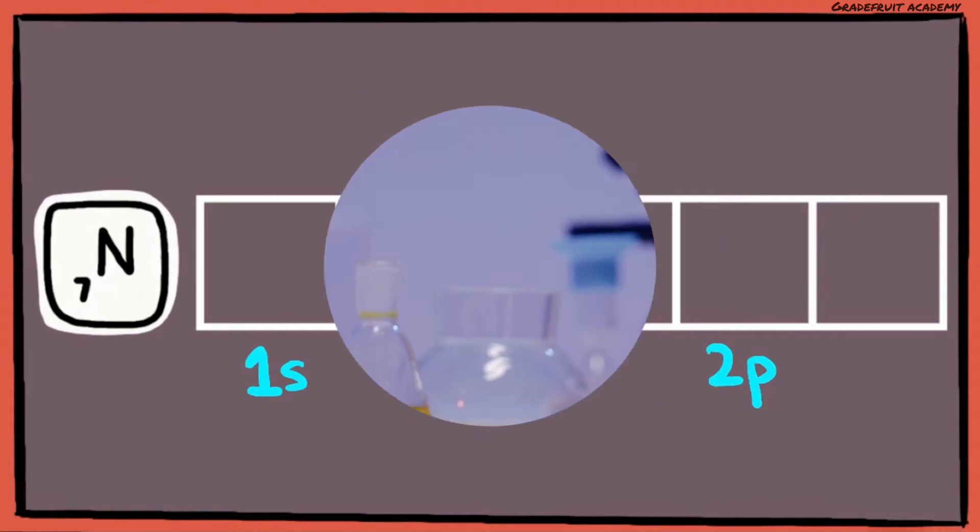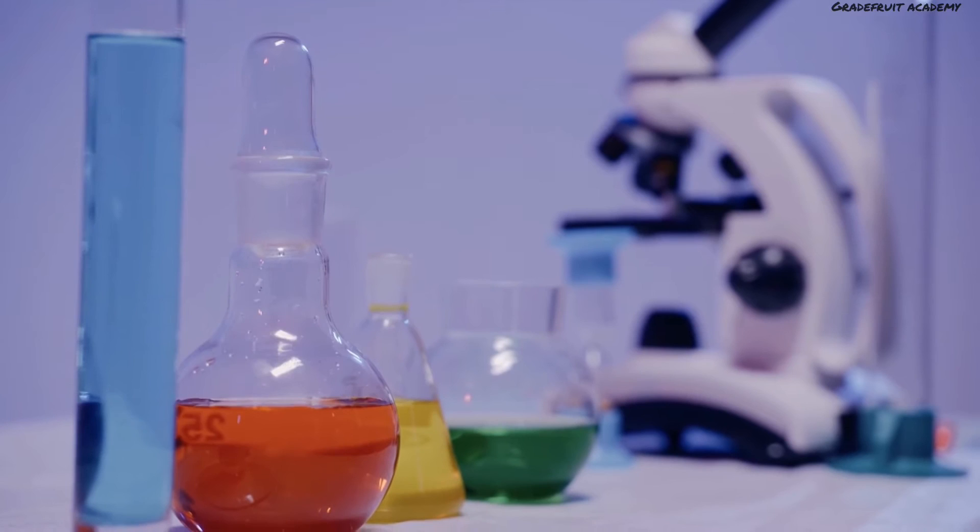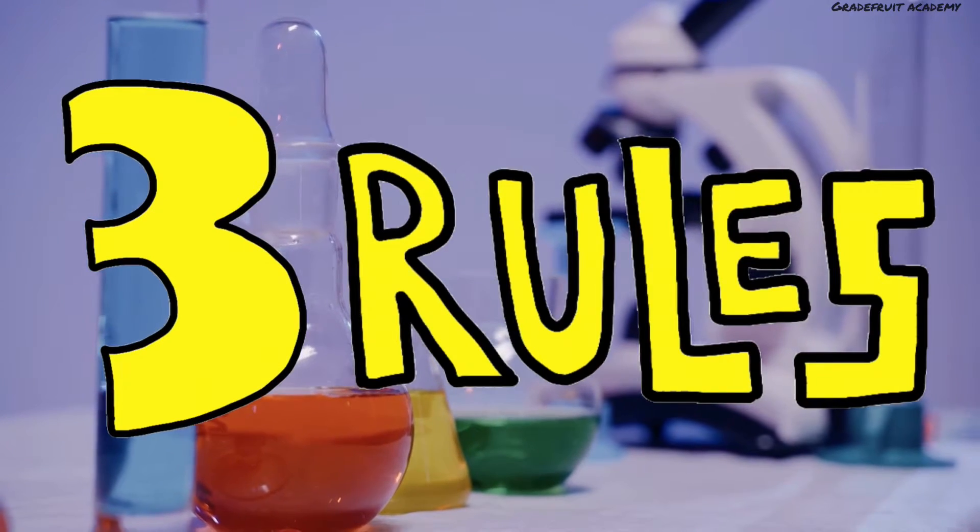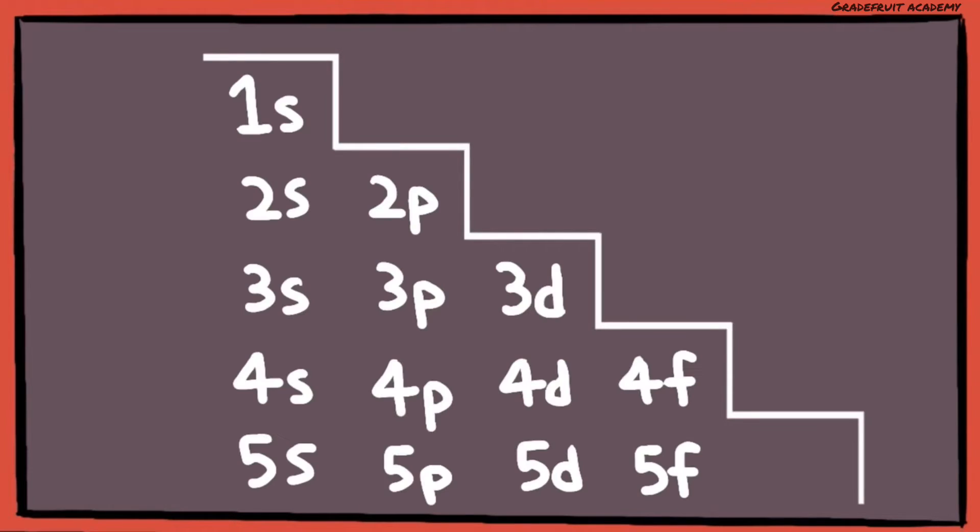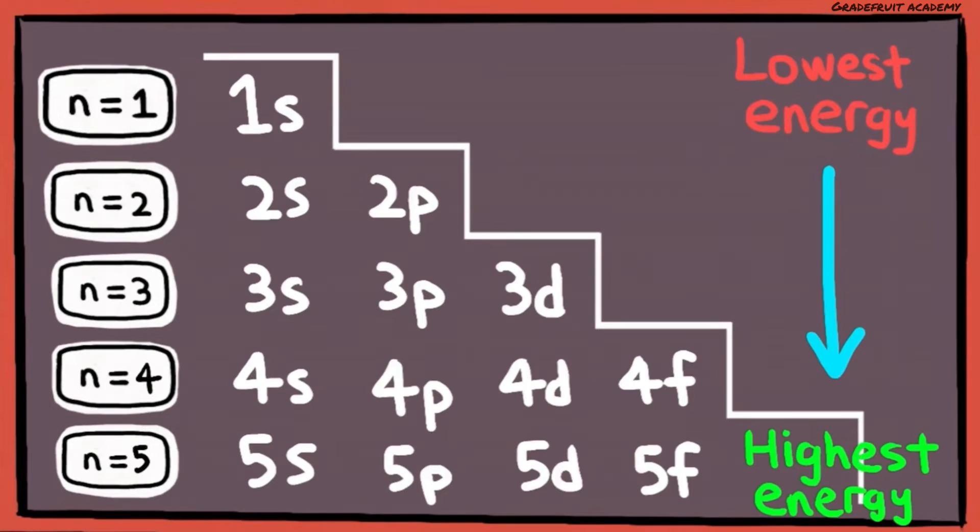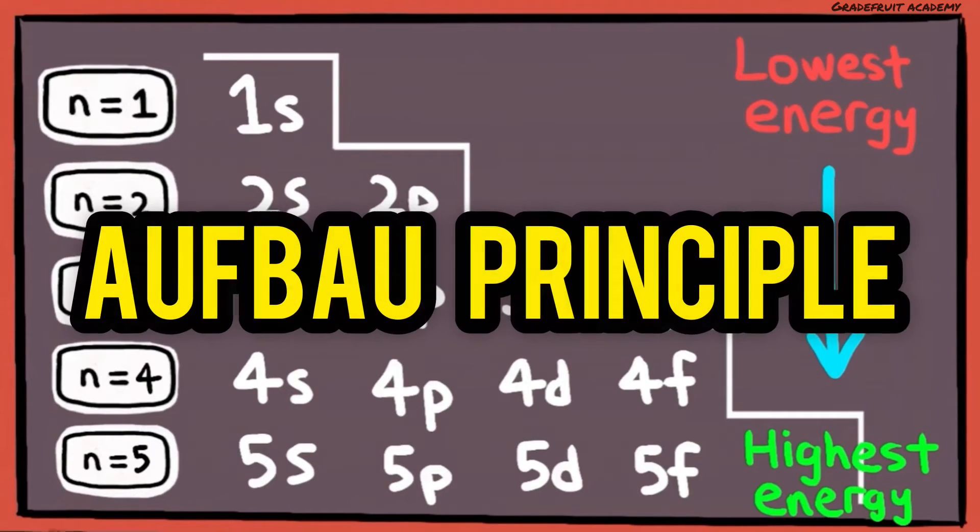To fill up the orbitals with electrons, we need to first learn the three rules of the game. The first rule is that we need to fill the electrons starting from the lowest energy orbital onwards. This is also known as the Aufbau principle.